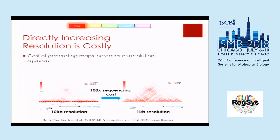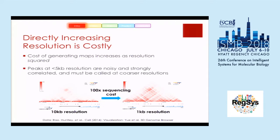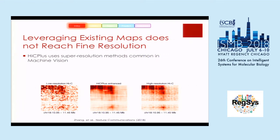One way we could approach this is by increasing resolution directly. Unfortunately, because Hi-C generates a 2D matrix, this becomes very expensive — increasing the resolution by a factor of 10 increases the cost by a factor of 100. Additionally, these peaks are very, very noisy, so calling peaks at anything less than 5KB is essentially randomly guessing. I hope you appreciate that the difference between these peaks by eye doesn't look very different. Another method is leveraging existing maps to increase resolution computationally — so Hi-C Plus leverages maps from other cell types. Unfortunately, they've only generated maps as fine as 10KB, and it's not clear how we can increase it further.